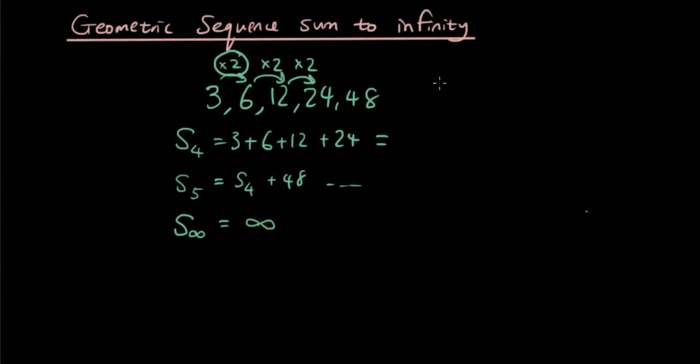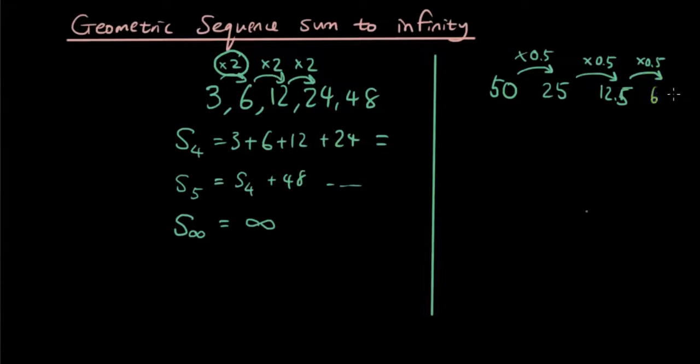But if we have another sequence where the ratio is between 0 and 1, only between 0 and 1, not less than 0. Let's say I have the sequence starting at 50, and let's make the ratio 0.5. So it'll be 50, 25, 12.5, and so on. Whatever that is, 6.25.